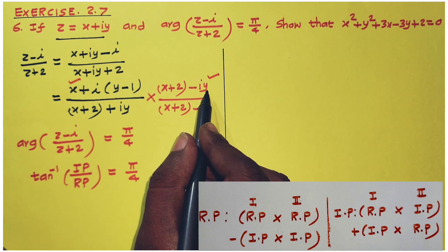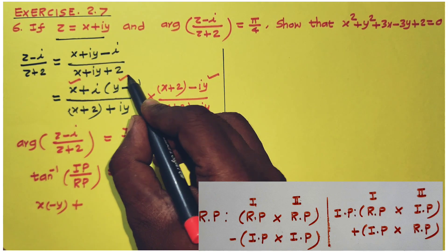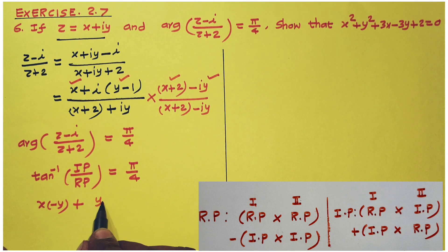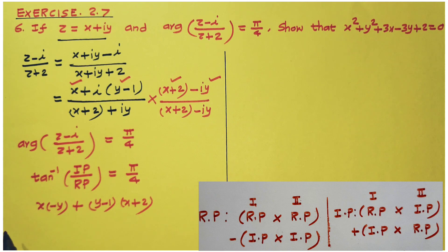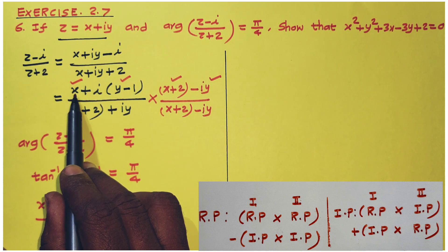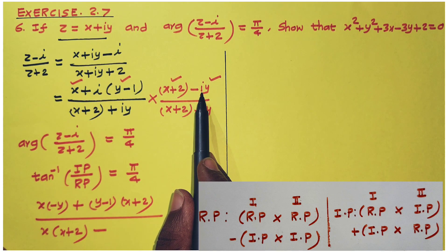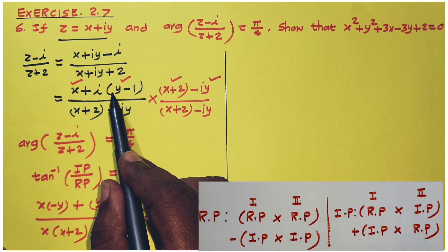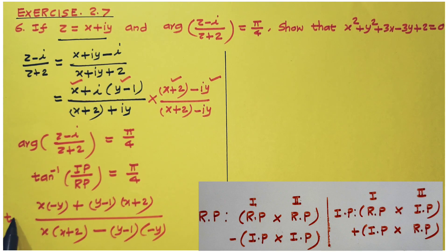For the imaginary part of the numerator: first real times second imaginary gives x times minus y, plus first imaginary times second real gives (y minus 1) into (x plus 2). For the real part of the denominator: first real times second real gives x into (x plus 2), minus imaginary times imaginary where i squared equals minus 1, giving minus (y minus 1) times minus y.